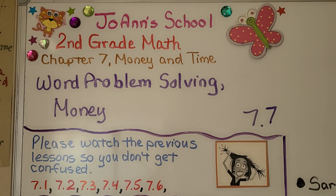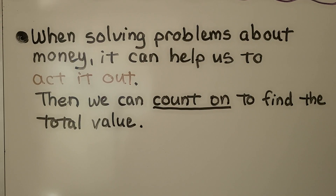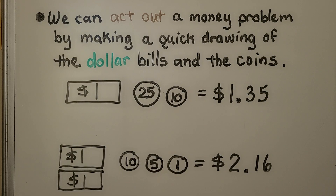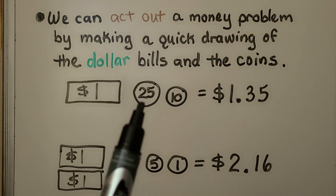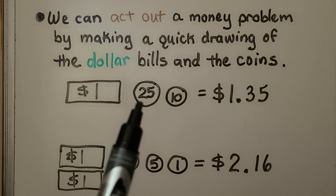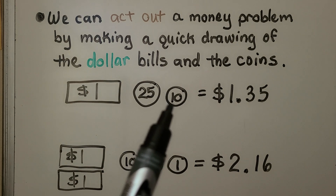Lesson 7.7: Word Problem Solving with Money. When solving problems about money, it can help us to act it out, then we can count on to find the total value. We can act out a money problem by making a quick drawing of the dollar bills and coins. We make a rectangle and write $1 inside, and a circle with 25 for a quarter or 10 for a dime.